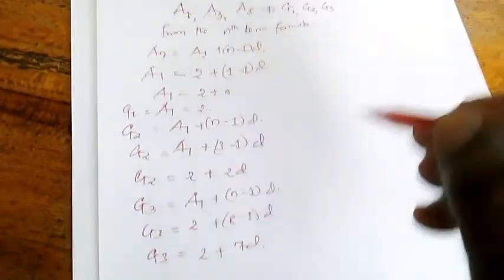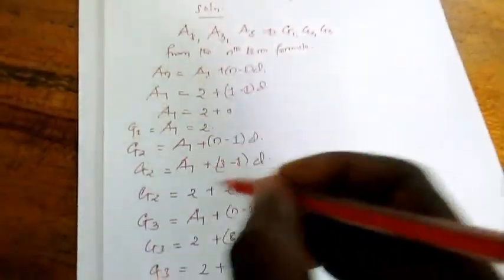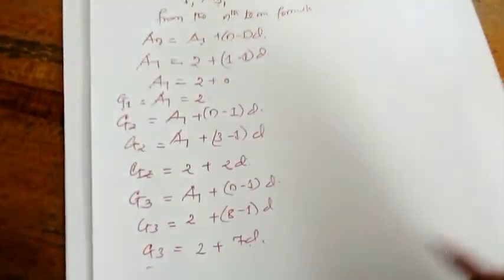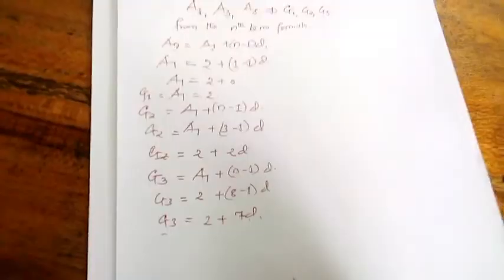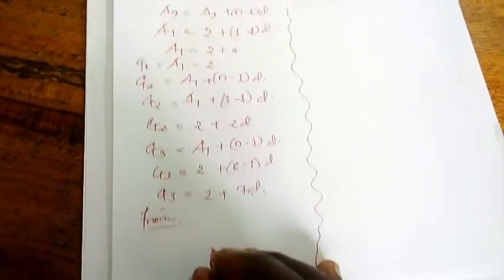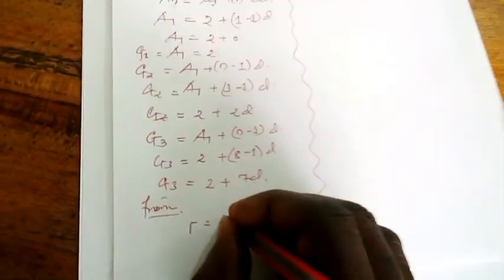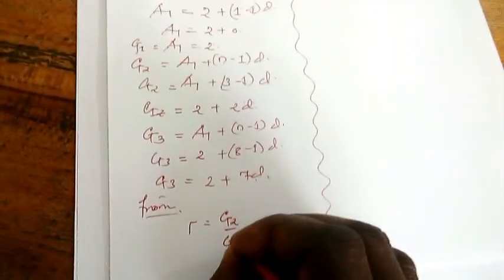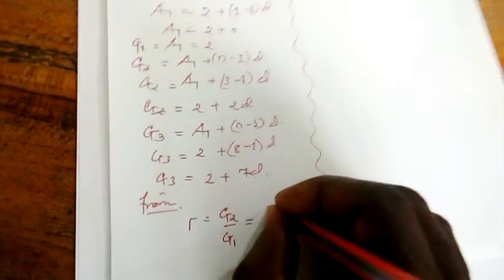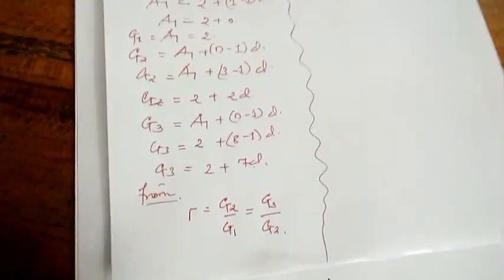We were given first term is 2. N is which term? This is eighth term. So in N we put 8, so 8 minus 1 times D. 8 minus 1 equals 7. So G3 equals 2 plus 7D. This is the first, second, and third term. But this first, third, and eighth form the first, second, and third terms in geometrical progression.